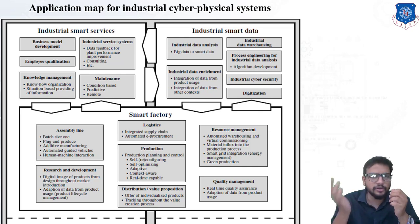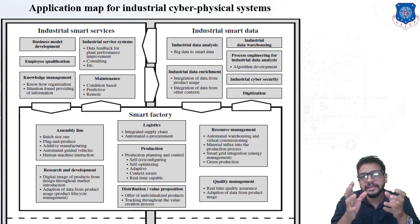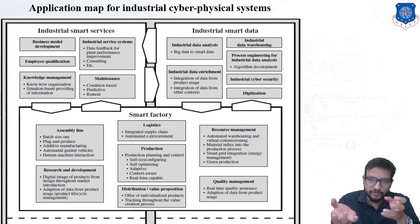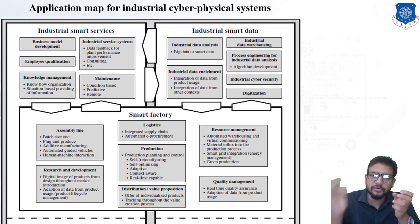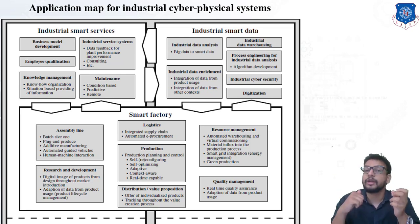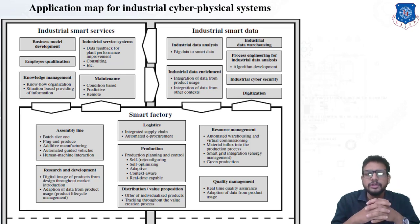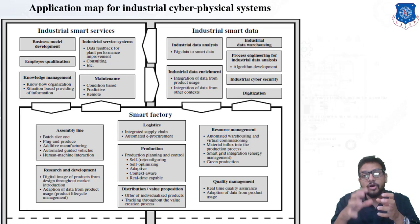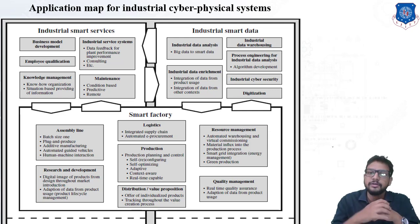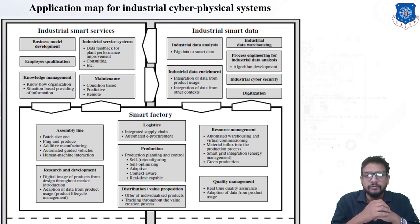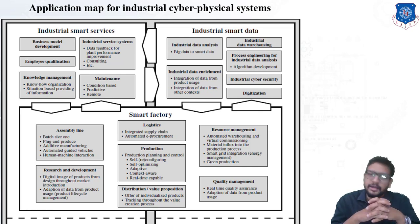The framework for a smart factory is based on the levels of the automation pyramid. A sensor takes information from a device, and that information is given to the next level — the PLC, programmable logic controller. From there it goes to SCADA, supervisory data acquisition, which acquires all the data. From SCADA, the data is stored in a cloud, from which we can easily access the required data of that particular company.